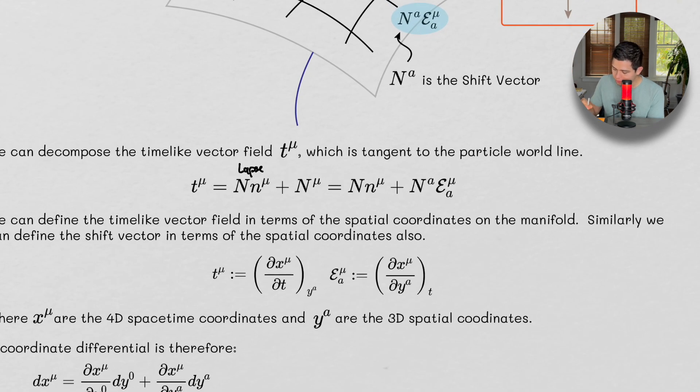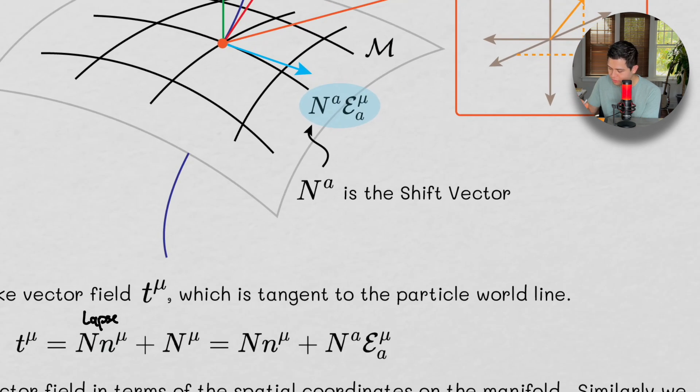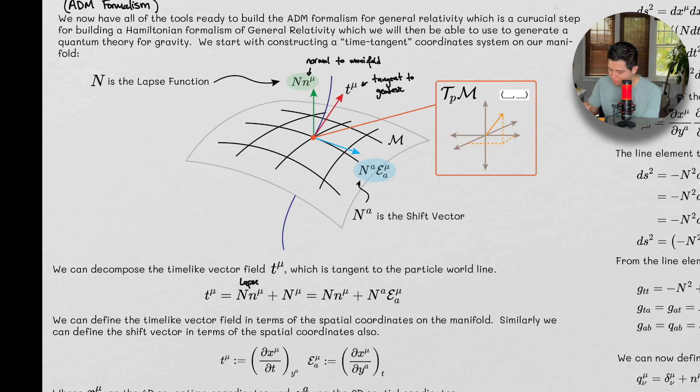Okay, so we have, so this is our lapse function. This is our shift vector. We can replace our shift vector with the definition we have here. And we'll see exactly what this thing is in a bit.